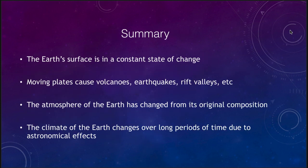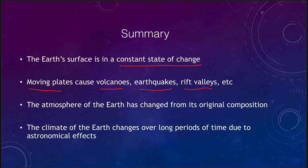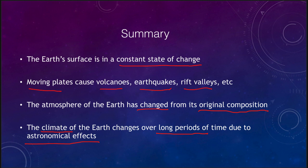The Earth's surface itself is in a constant state of change — the continents we see today are not what they looked like hundreds of millions of years ago, and not what they will look like hundreds of millions of years from now. These moving plates cause things like volcanoes, earthquakes, and rift valleys. The atmosphere of the Earth has also changed — it is not the same as it was originally. And climate changes over long periods due to astronomical effects like the tilt of the Earth and the shape of the Earth's orbit. That concludes our lecture on the surface and atmosphere of the Earth. We'll be back again next time for another topic in astronomy — have a great day everyone!